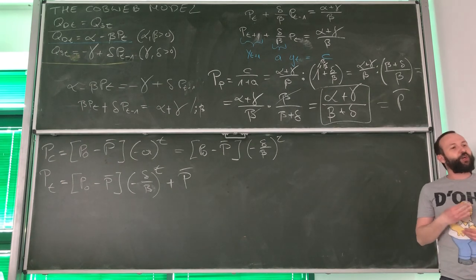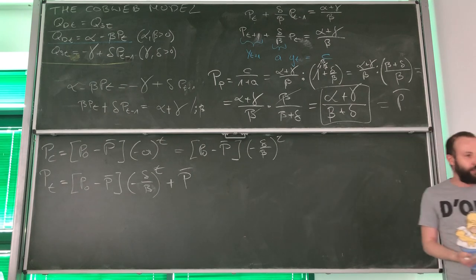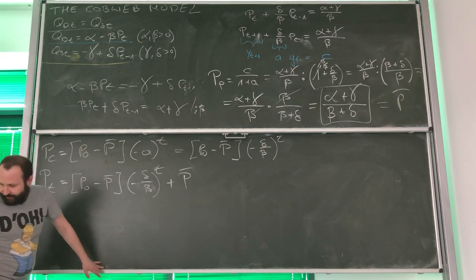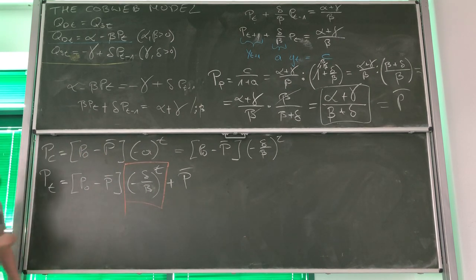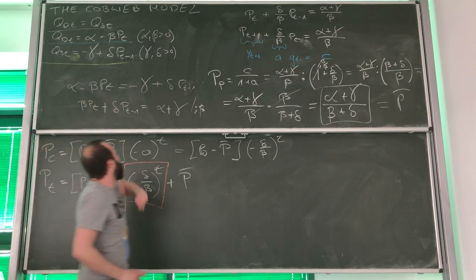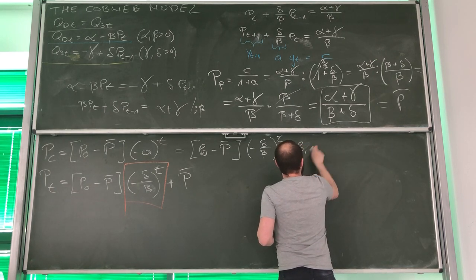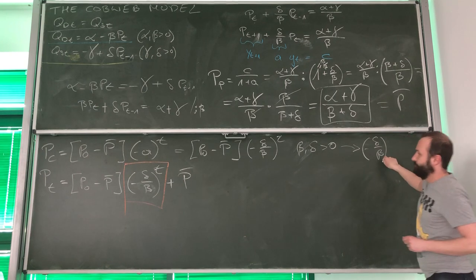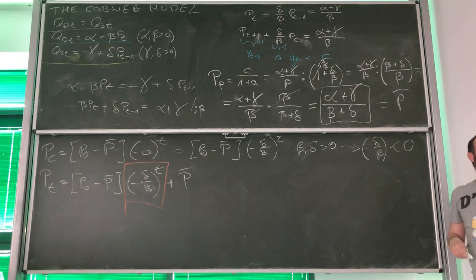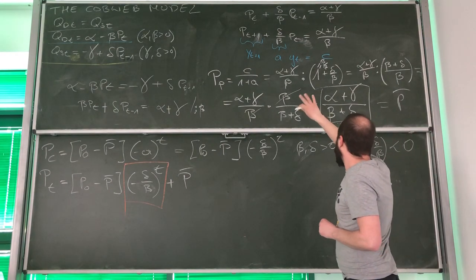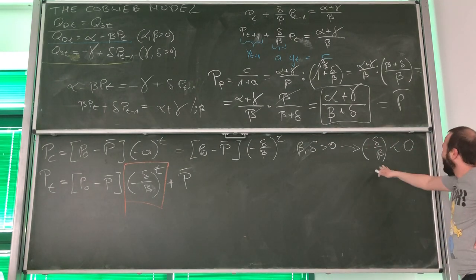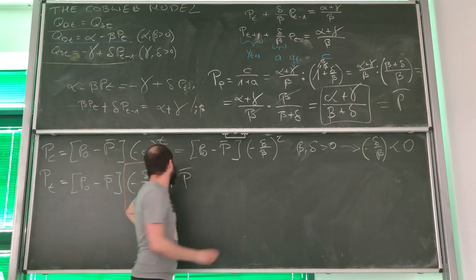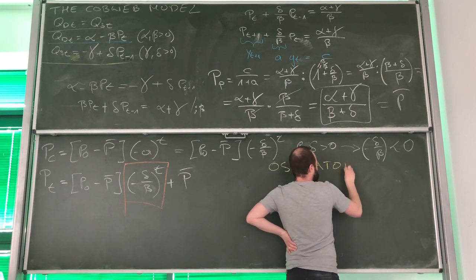The shape of the time path depends on the expression negative delta over beta. Under our assumptions, both beta and delta are positive, which means negative delta over beta must be negative. When our coefficient B — which equals negative a — is negative, we know for sure that we are going to have an oscillatory time path, meaning the price moves above, below, above, below equilibrium.